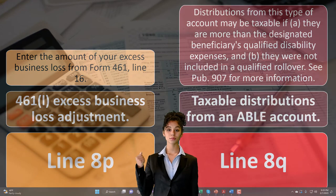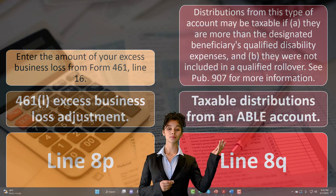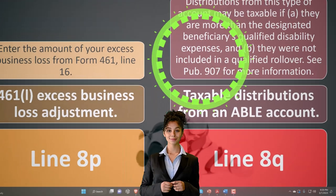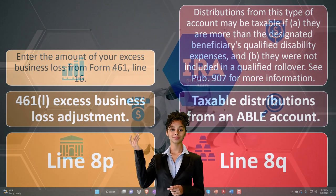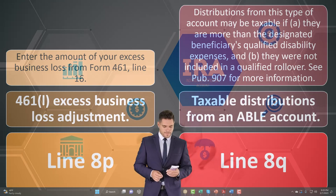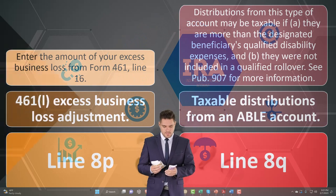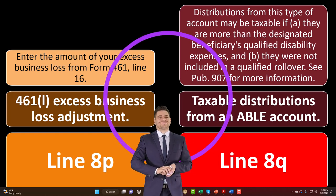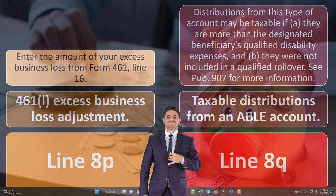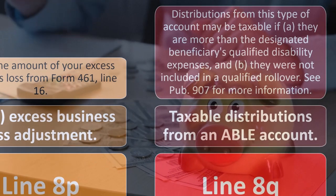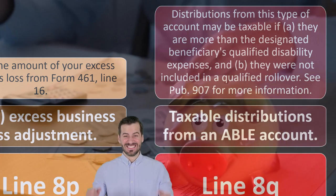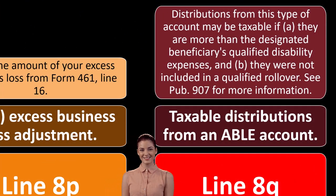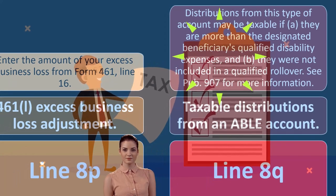An ABLE account is a tax-advantaged savings account for individuals with disabilities. It's similar in concept to a Roth IRA — you put the money in and potentially don't pay tax on the account's income if you use it for the purposes the government intends. With a Roth IRA they want you to save for retirement; with an ABLE account they want you to use the money for disability savings purposes. If you use it for some other purpose, you could have an income-triggering situation.